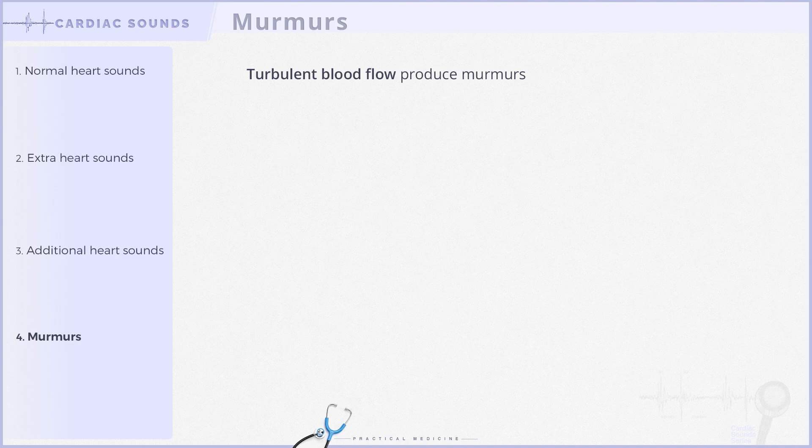A cardiac murmur, if audible, is attributed to turbulent blood flow across the heart valves. While some murmurs are benign — commonly called innocent murmurs — they often serve as potential indicators of underlying valvular pathologies.